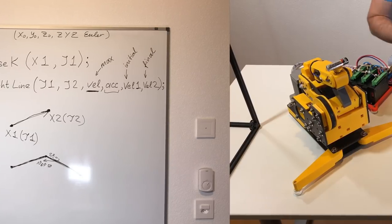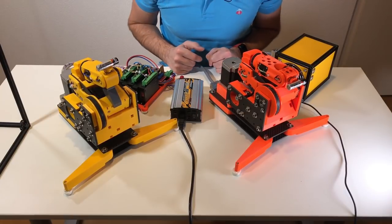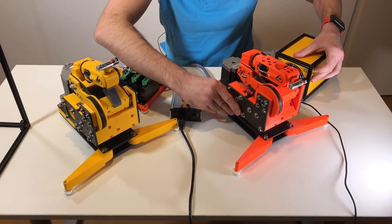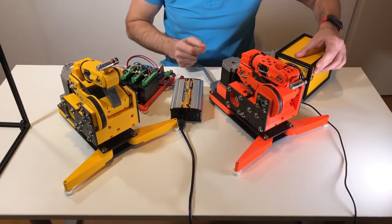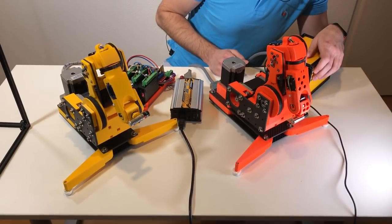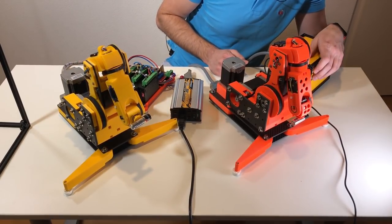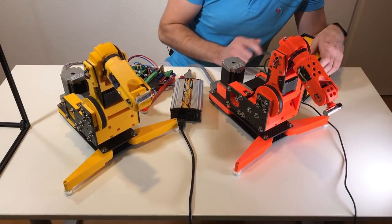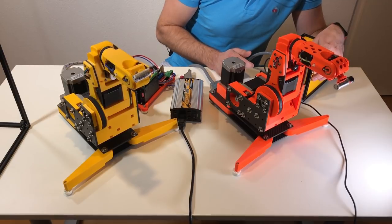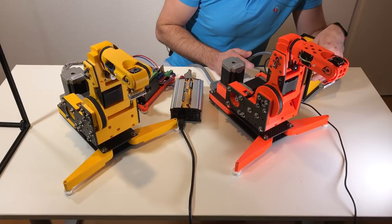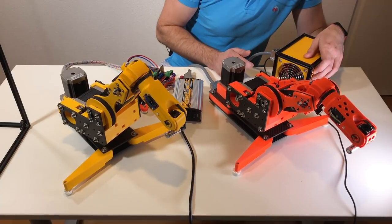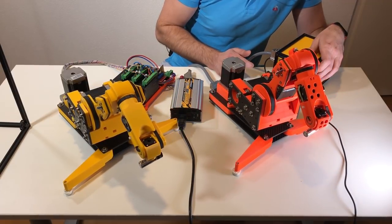Now I have two robots and I can move them more or less at the same time. Let's try. Everything is ready. They're moving axis number 3 to go to the home position, then axis number 5. Now the main movements begin — not very synchronous, but it works.